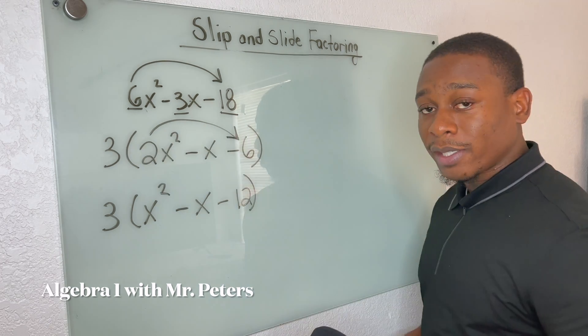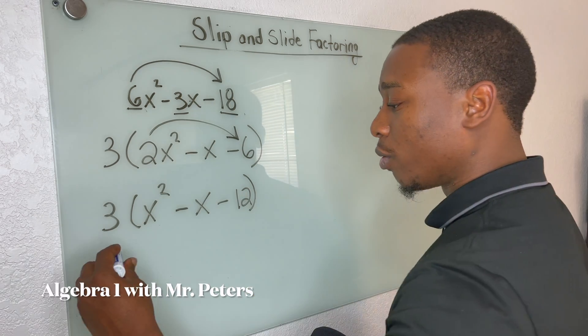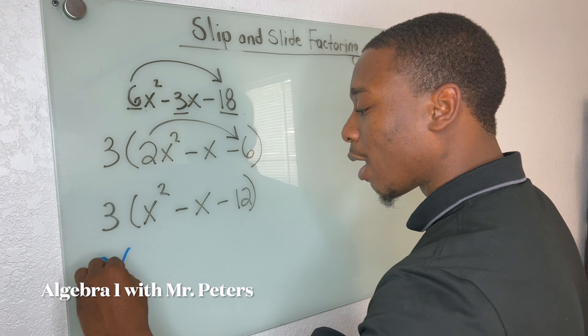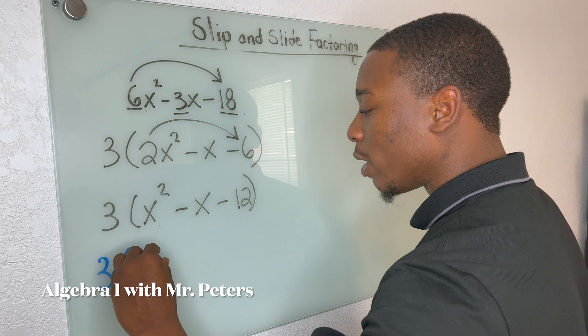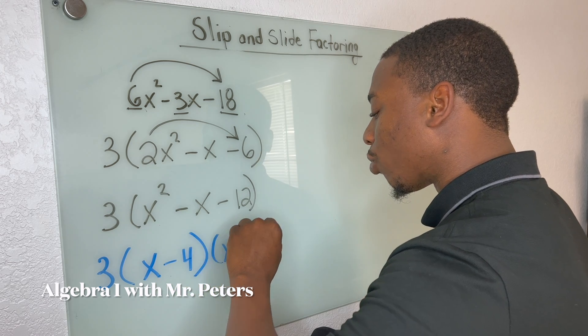We multiplied A and C. Now we need to determine, can we factor this now? So we keep our three outside. And this is going to turn out to be X minus four times X plus three.